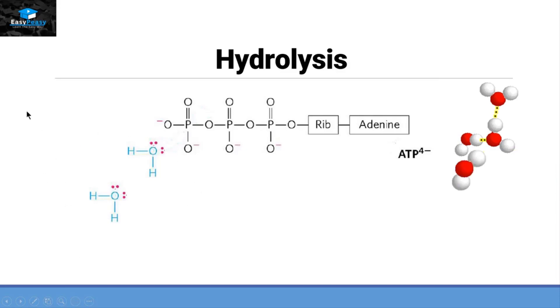If this lone pair of this oxygen interacts with hydrogen over here, this oxygen will get the liberty to have its lone pair attack the phosphate group present in the ATP molecule.